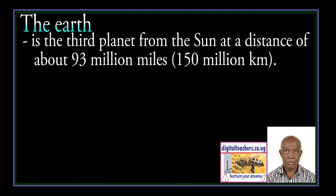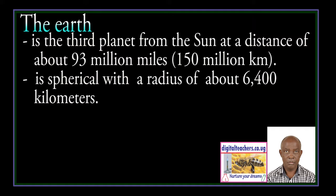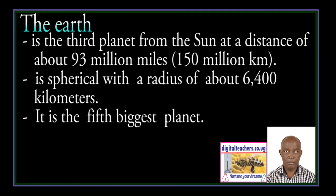The earth is the third planet from the Sun at a distance of about 93 million miles or 150 million kilometers. The earth is spherical with a radius of about 6,400 kilometers. It is the fifth biggest planet.